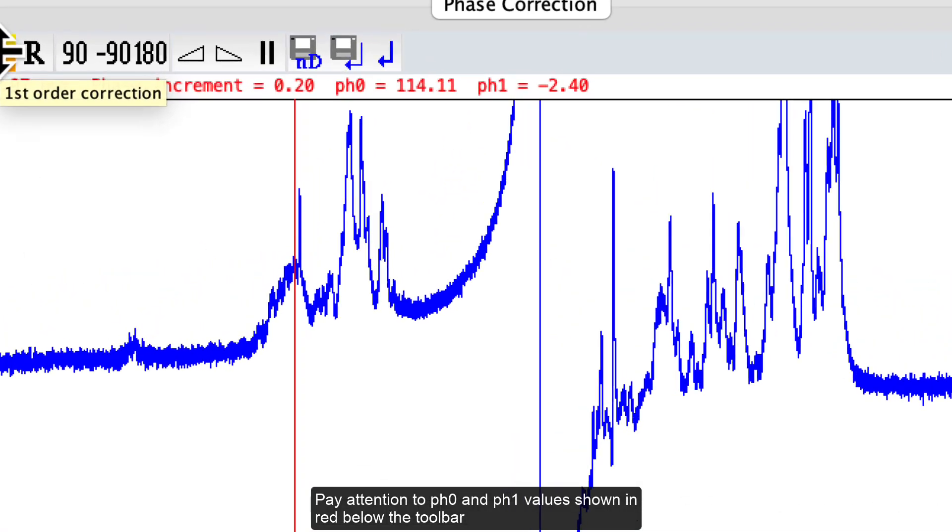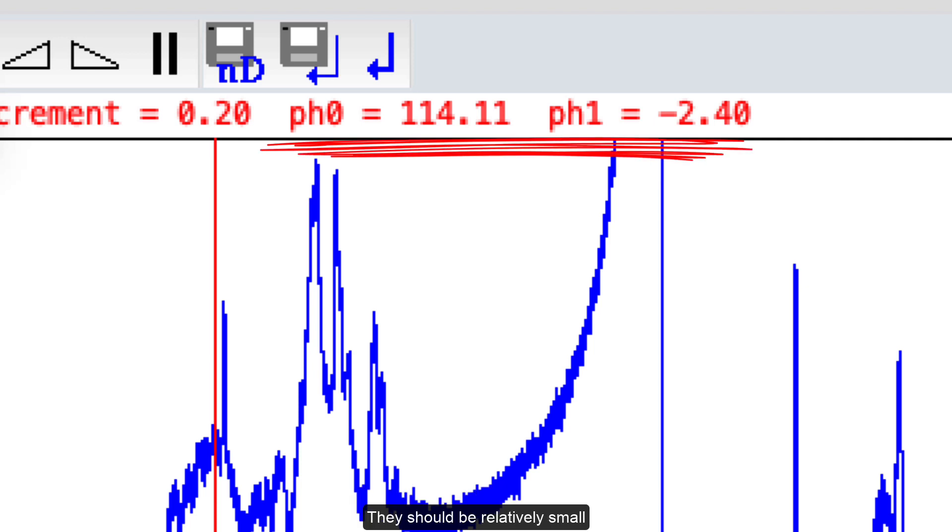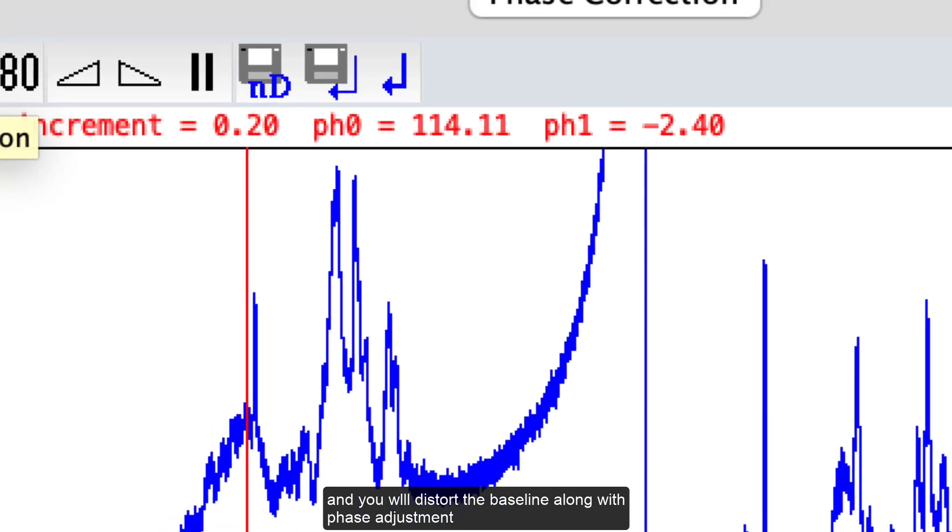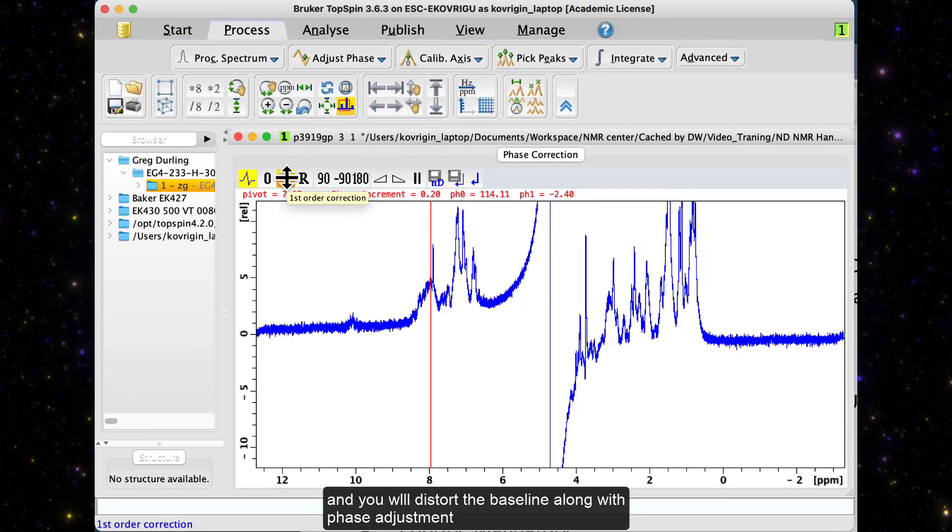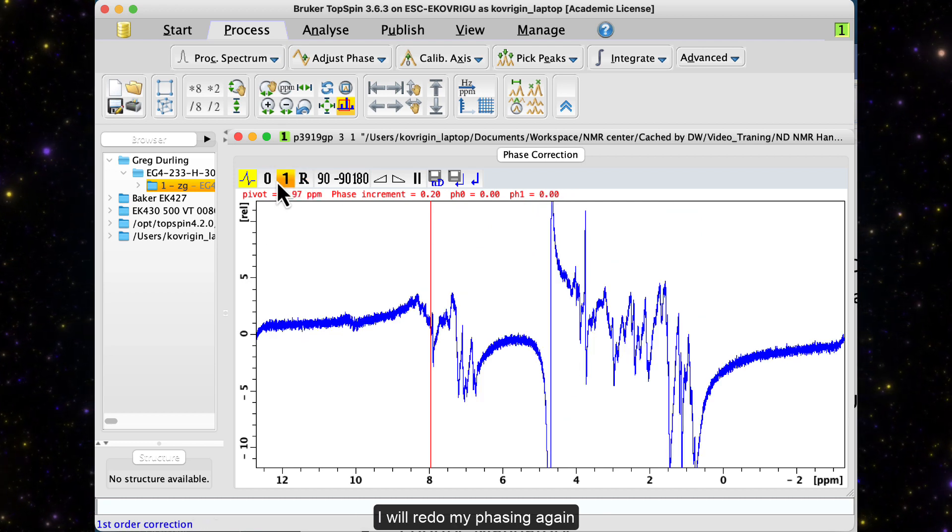Pay attention to pH0 and pH1 values shown in red below the toolbar. They should be relatively small. If you see them going into hundreds, you adjusted too much. You also will distort the baseline along with your phase adjustment. In this case, click R and start over. I will redo my phasing again.